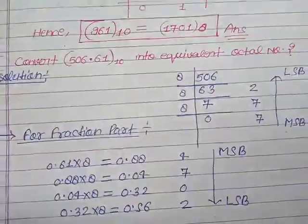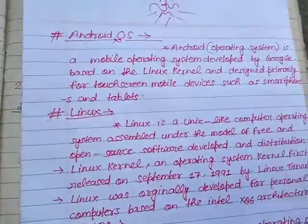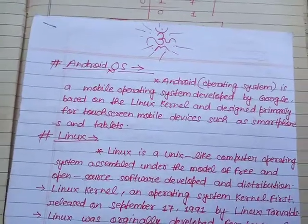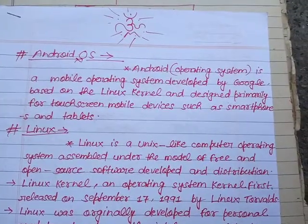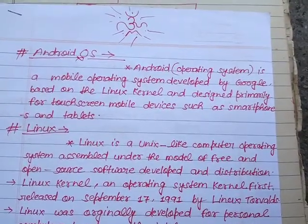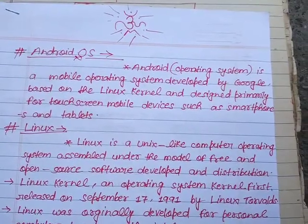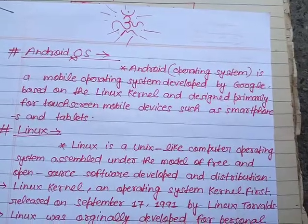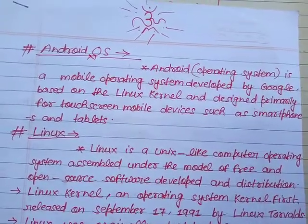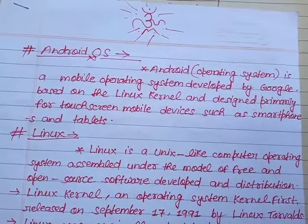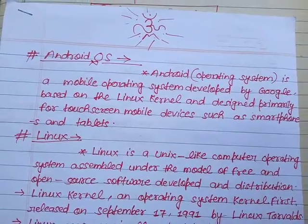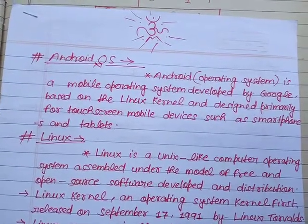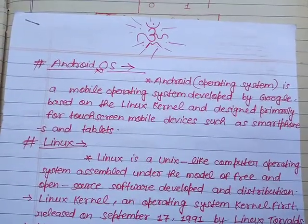Now I am going to explain about some types of operating systems which are more popular today. First, Android operating system. Android operating system is a mobile operating system developed by Google, based on the Linux kernel, and designed primarily for touchscreen mobile devices such as smartphones and tablets. It means Android operating system is developed by Google and its kernel is based on the Linux kernel. The primary goal to design this operating system was for smartphones and tablets.